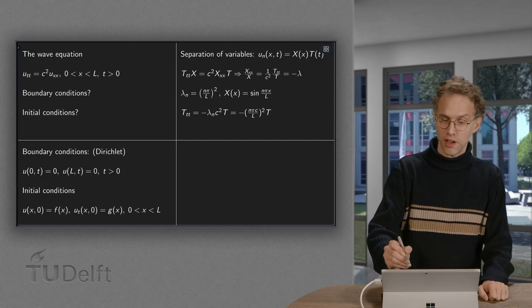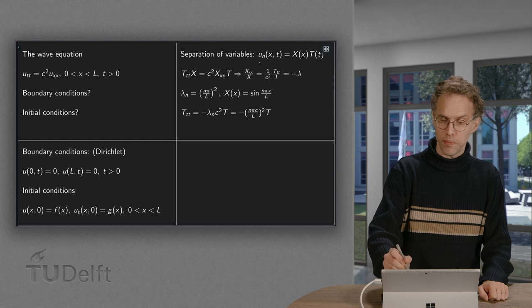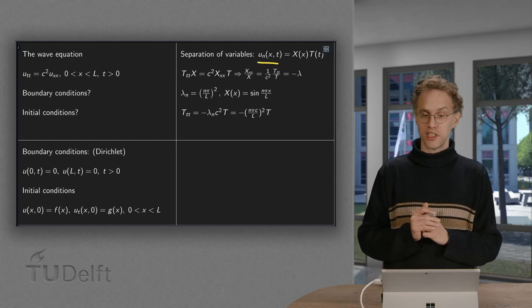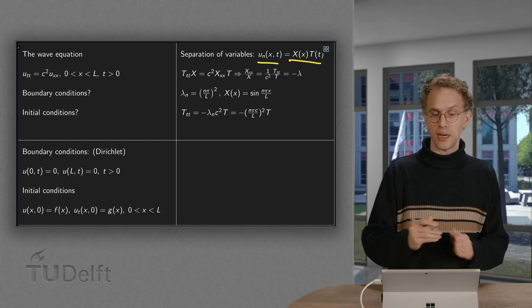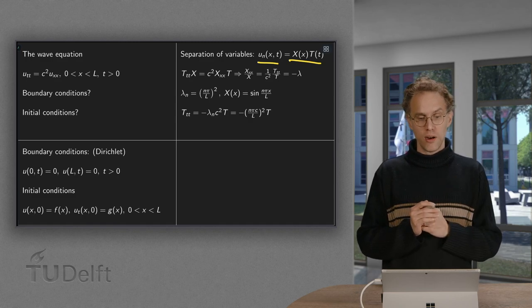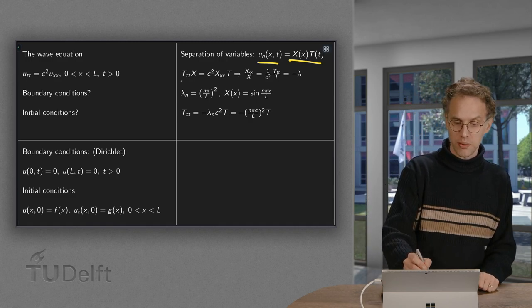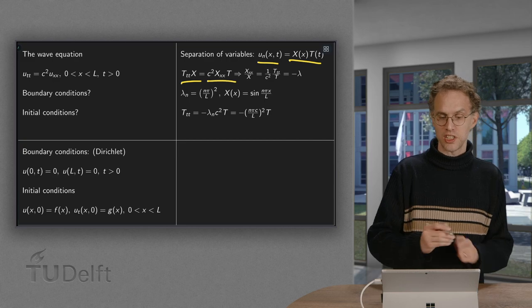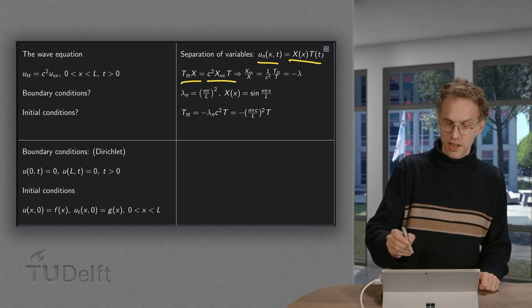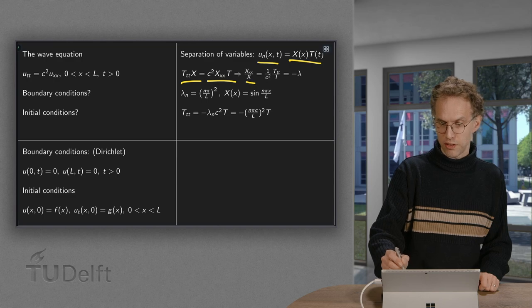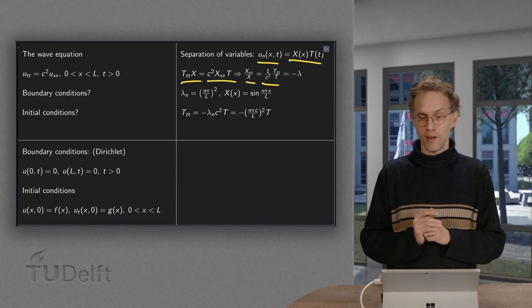We look for functions of the form u_n of x and t equals X of x times T of t. Now plug that in, you get T'' times X equals c squared times X'' times T. Divide by X, you get X''/X equals 1 over c squared times T''/T.